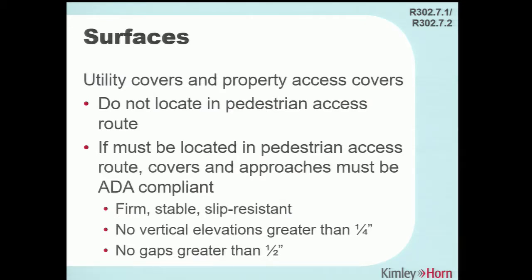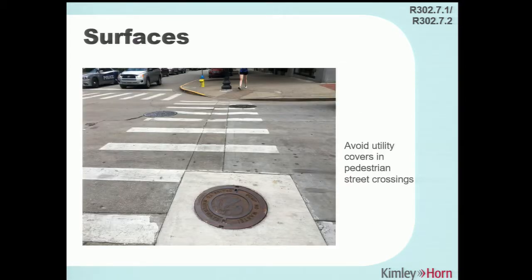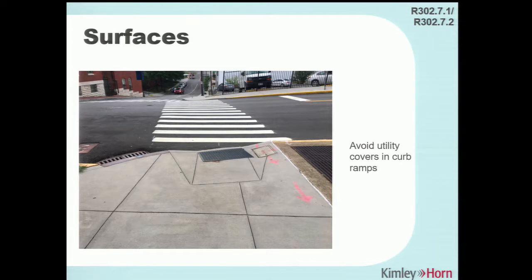If you have grates in the sidewalk, make sure the slits are aligned perpendicular to the pedestrian path of travel — or oriented so both directions are equally accessible — to prevent wheelchair wheels from getting stuck. One photo shows a utility cover in a crosswalk, which is okay, but adjacent excessive cracking indicates an ongoing maintenance problem as the underlying terrain shifts. Another example shows a pull box placed on the flare of a curb ramp where other locations were available — acceptable for now, but cracking over time will require repair.